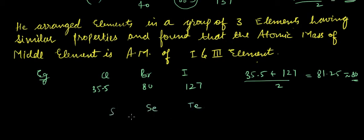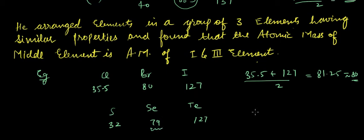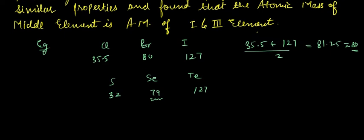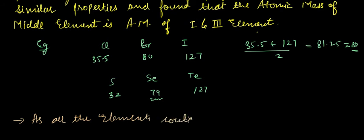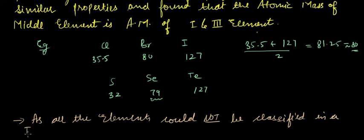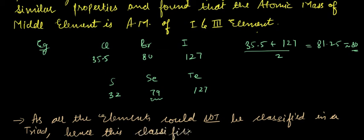Another example was sulfur, selenium, and tellurium. Sulfur has atomic mass of 32, selenium has 79, and tellurium has atomic mass of 127. Adding 32 plus 127 gives a value nearly equal to 79.5, which is close to selenium's 79. However, all the known elements could not be arranged in the form of triads, hence this classification was discarded.